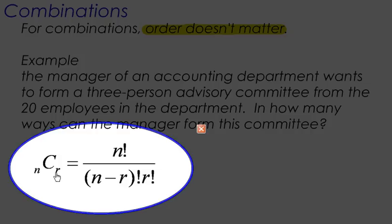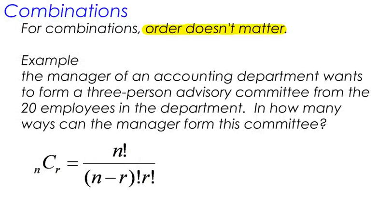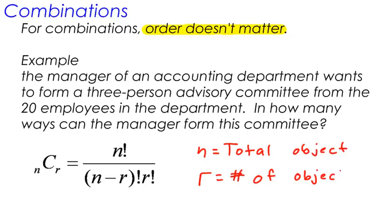And R is the total number, or R is the amount of things that you want to choose. So I'll make a little note over here. N is equal to the total amount of objects. Sometimes it's people. In fact, in our example, we're going to look at people. And R is the number of objects chosen.